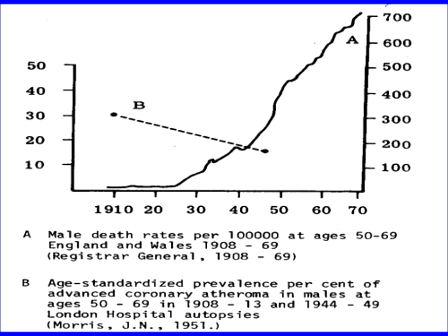Is this due to more coronary atherosclerosis? Interestingly, in the London hospital — a hospital in the east end of London where all the poor people lived — if you died there you routinely had an autopsy. One of the pathologists, for about a five-year period around 1910, systematically dissected the coronary arteries of these men and found that 30% of men aged 50 to 69 years had extensive advanced coronary atheroma. Interestingly, in the late 1940s when this epidemic was well underway, this was repeated — and there had not been any increase in the prevalence of advanced coronary atherosclerosis. If anything, it had gone down from 30% to 20%.